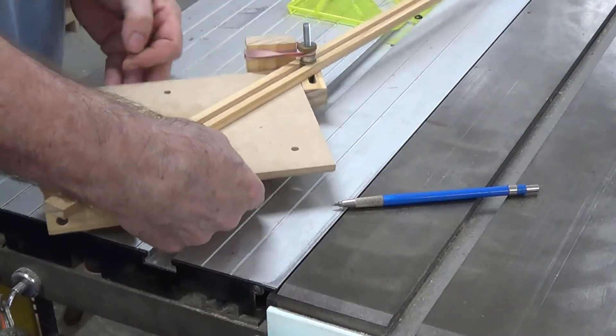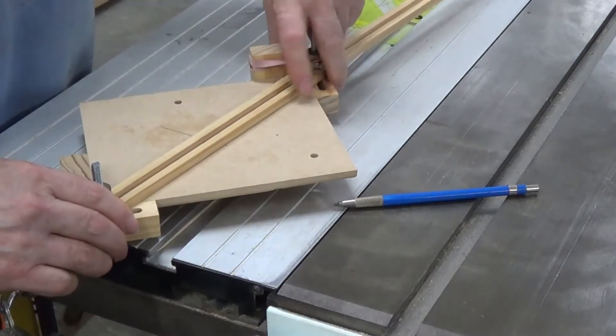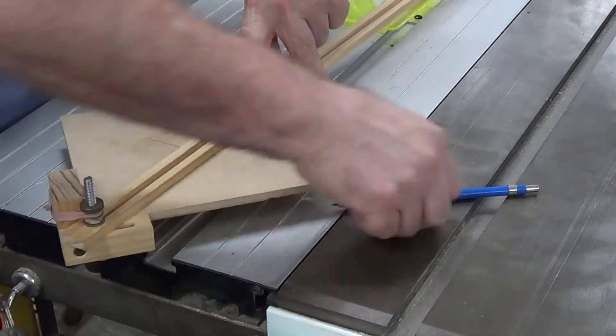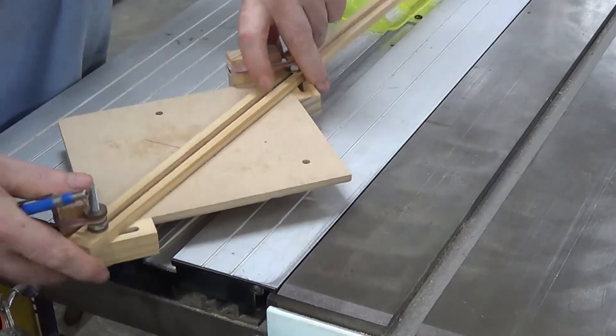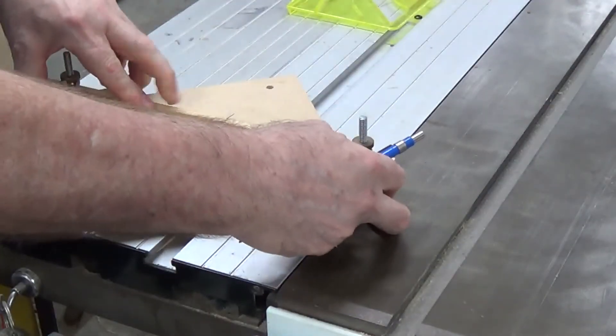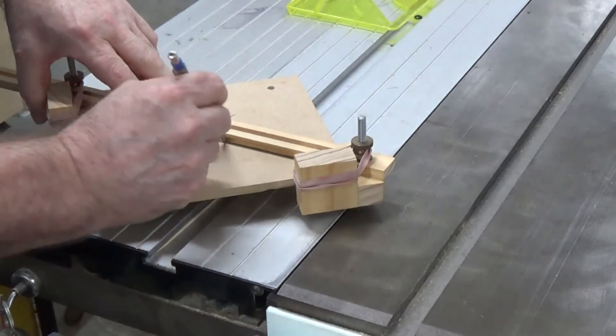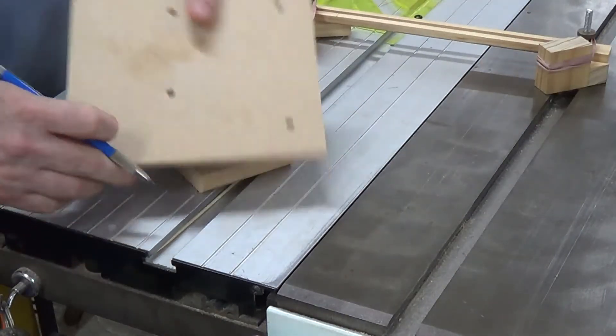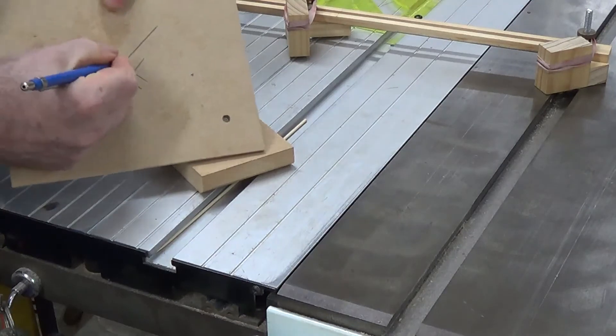We need to prop it up a little bit to get it off the tabletop, but you bring these two little things together, mark your center, bring it across the other side, mark your center, and now you have your center there.